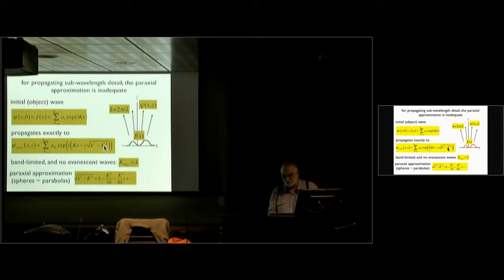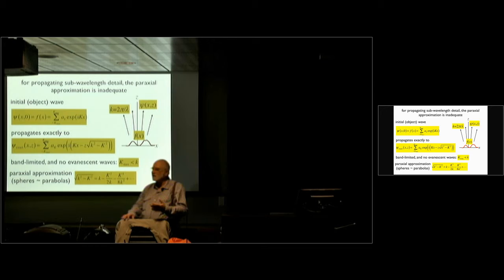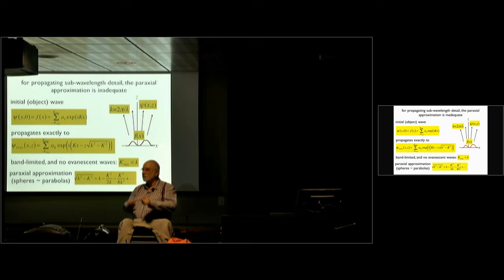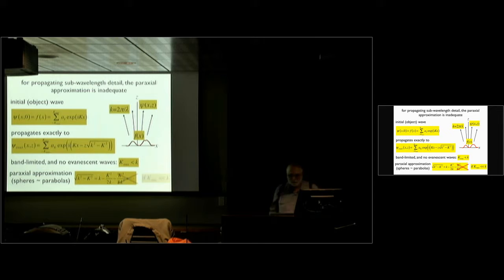The paraxial approximation — which approximates spheres by parabolas — is simply to take the first term in the Taylor expansion of this square root. Here I'm including three of them, but paraxiality is the first one. It's enormously widely used — one of the best techniques. The reason is that you can do a lot of the integrals analytically if you've got k² as opposed to square root of k² minus K².